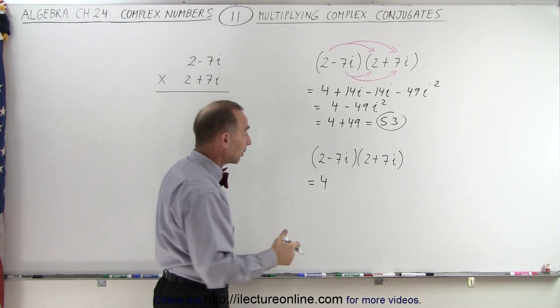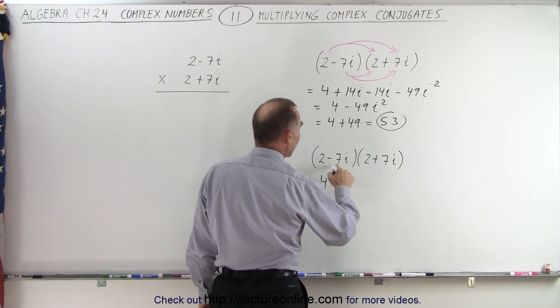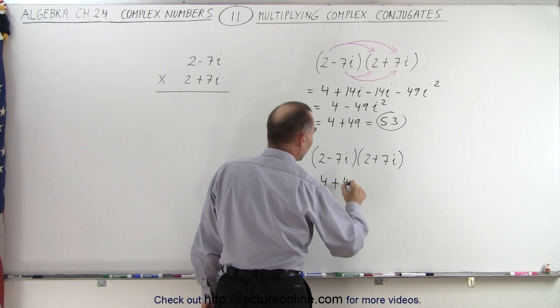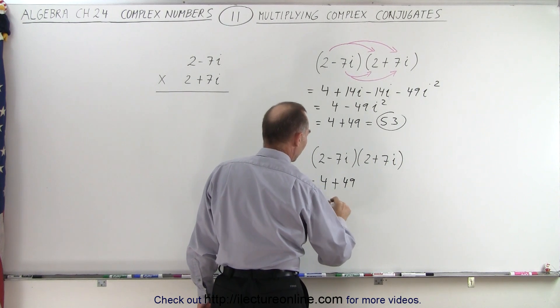That comes plus 49. So it's simply the positive of the product of those two numbers, which is 49, which equals 53.